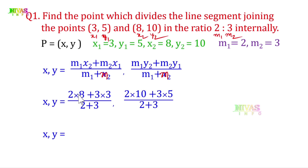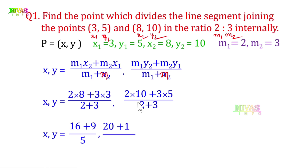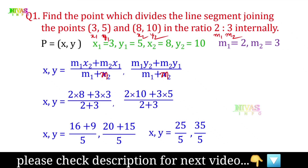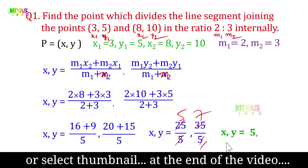Calculating: 2×8 = 16, 3×3 = 9, 2+3 = 5. For y: 2×10 = 20, 3×5 = 15, 2+3 = 5. So (x, y) = (25/5, 35/5) = (5, 7). After simplification, the x coordinate is 5 and the y coordinate is 7. This is the answer.